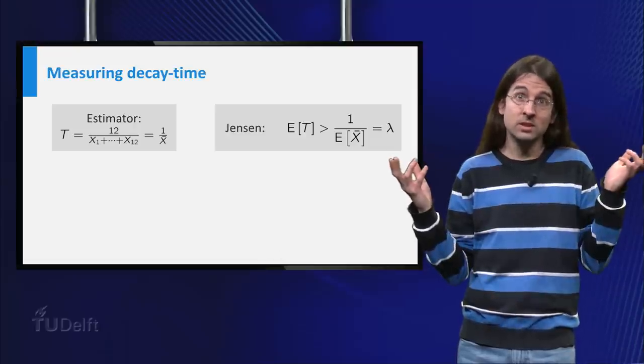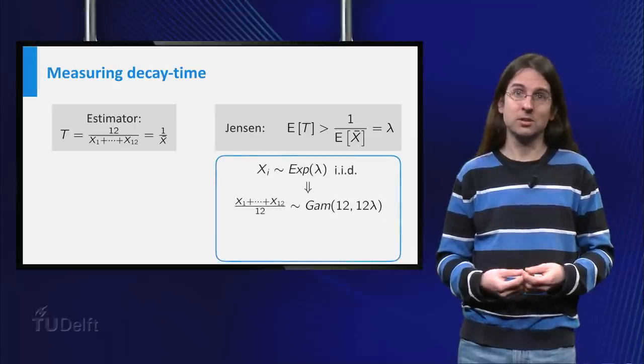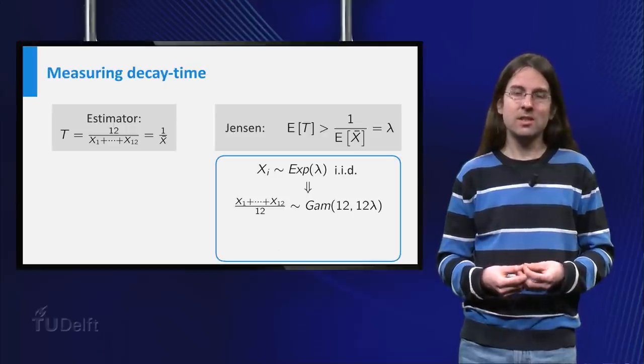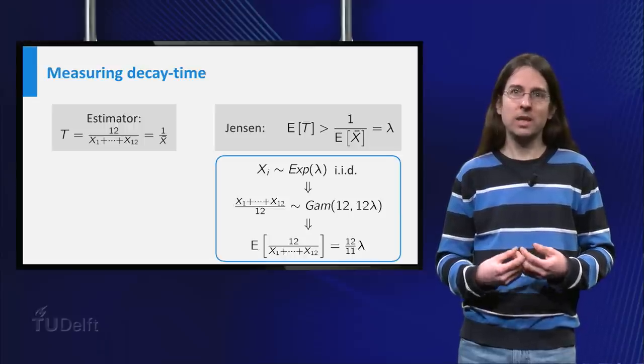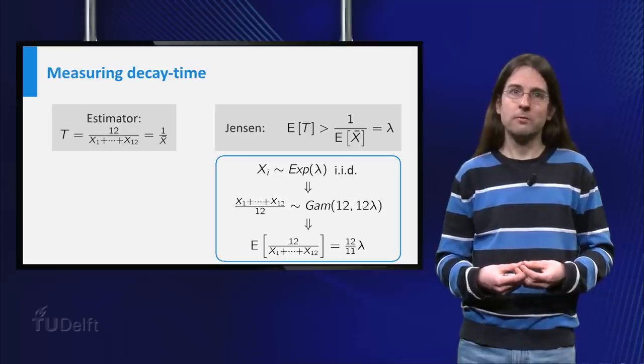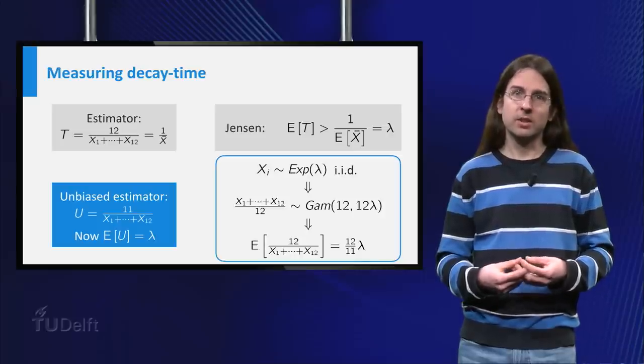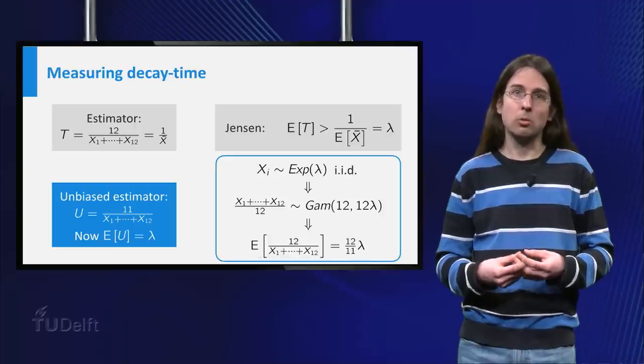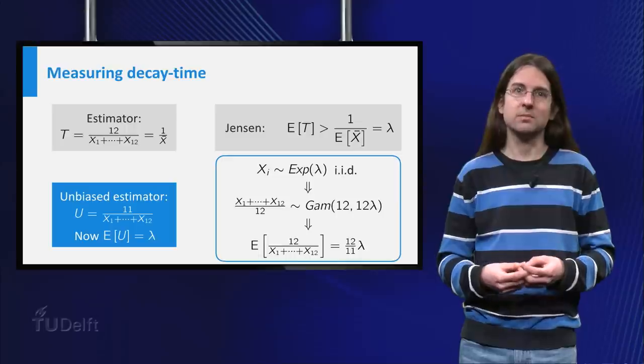How can we resolve this? Well, because we know that the average of several exponential distributions follows a gamma distribution, in this case we can explicitly calculate the expectation of 1 over the average. We find that this expectation equals 12 eleventh times lambda. So if we use 12 over 11 times 1 over the average as an estimator, the expectation of this new estimator u does equal lambda for all values of lambda. This new estimator is thus an unbiased estimator for lambda.